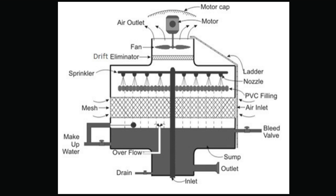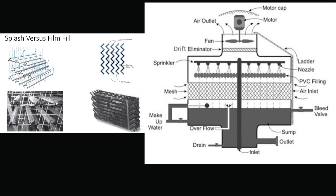Frame and casing: most towers have structural frames that support the exterior enclosures, casings, motors, fans, and other components. With some smaller designs, such as some glass fiber units, the casing may essentially be the frame. Fill: most towers employ fills made of plastic or wood to facilitate heat transfer by maximizing water and air contact.